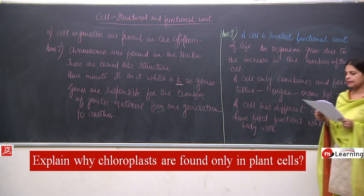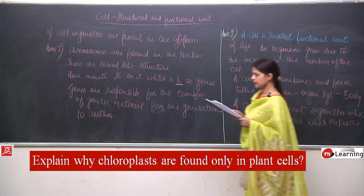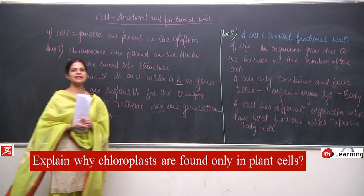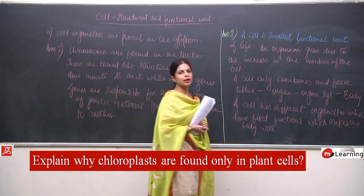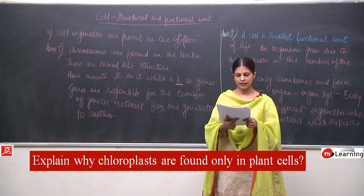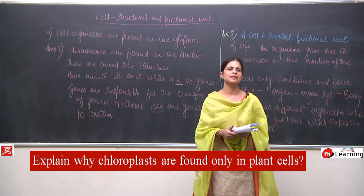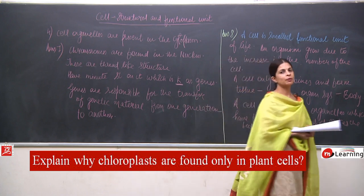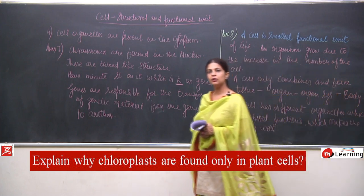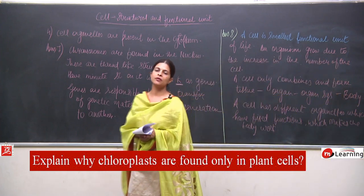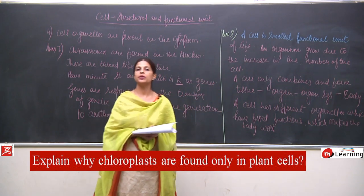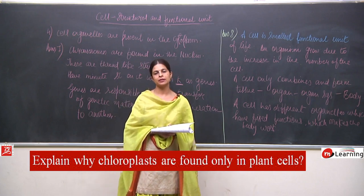Question number 9: explain why chloroplasts are found only in plant cells. We have discussed about the chloroplast — it contains chlorophyll, and you know the importance of chlorophyll. Chlorophyll is very important when we talk about the manufacture of food, that means the process of photosynthesis. Photosynthesis is a process in which plants prepare their own food.